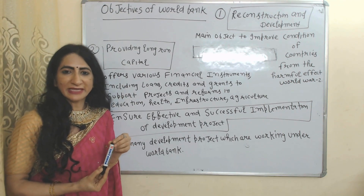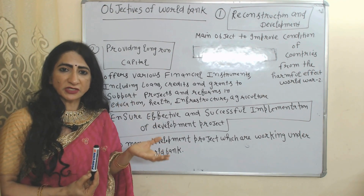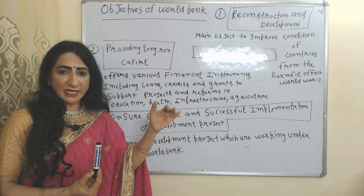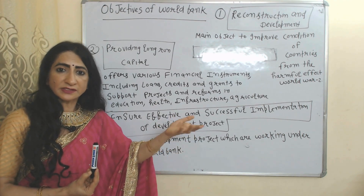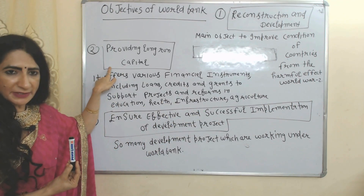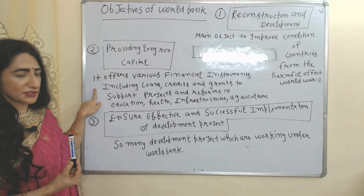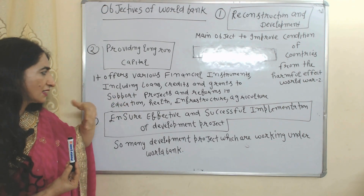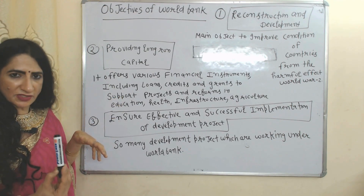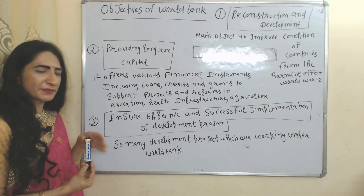Now we talk about the objectives of the World Bank. First: reconstruction and development — the main objective is to improve the condition of countries from the harmful effects of World War II. World Bank provides long-term capital to developing countries through various financial instruments like loans, credit, and grants to support projects and reforms in education, health, infrastructure, and agriculture sectors.